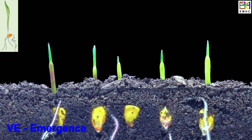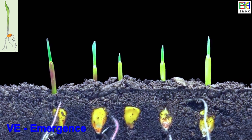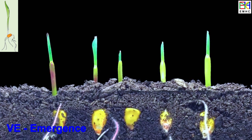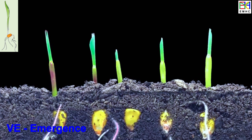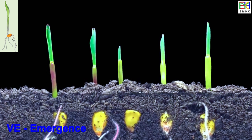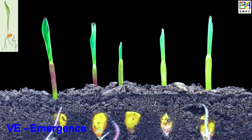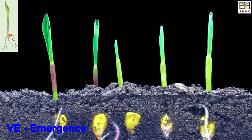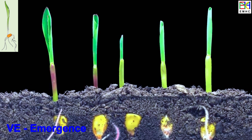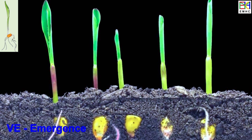During the emergence stage, the young corn plants are developing their first leaves and stem. The leaves typically have a long, narrow shape and a vibrant green color.